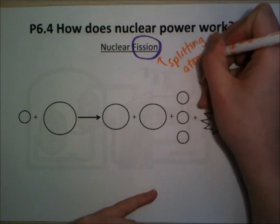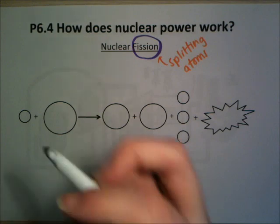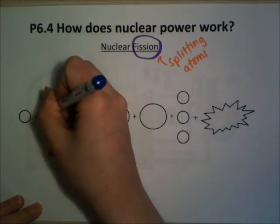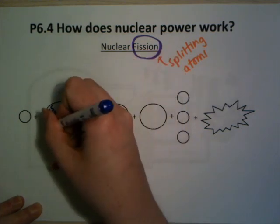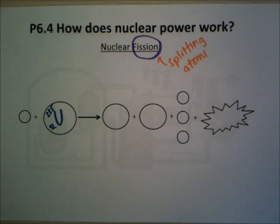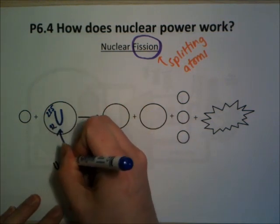The one we use in a nuclear power station is the splitting of uranium — you've probably heard of uranium. It has the symbol U, a mass number of 235, and an atomic number of 92. So there are 92 protons and 143 neutrons in there.